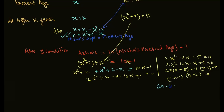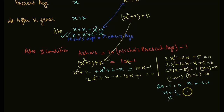2x minus 1 is equal to 0, and x minus 5 is equal to 0. So x equals 1/2, which is rejected, and x equals 5.